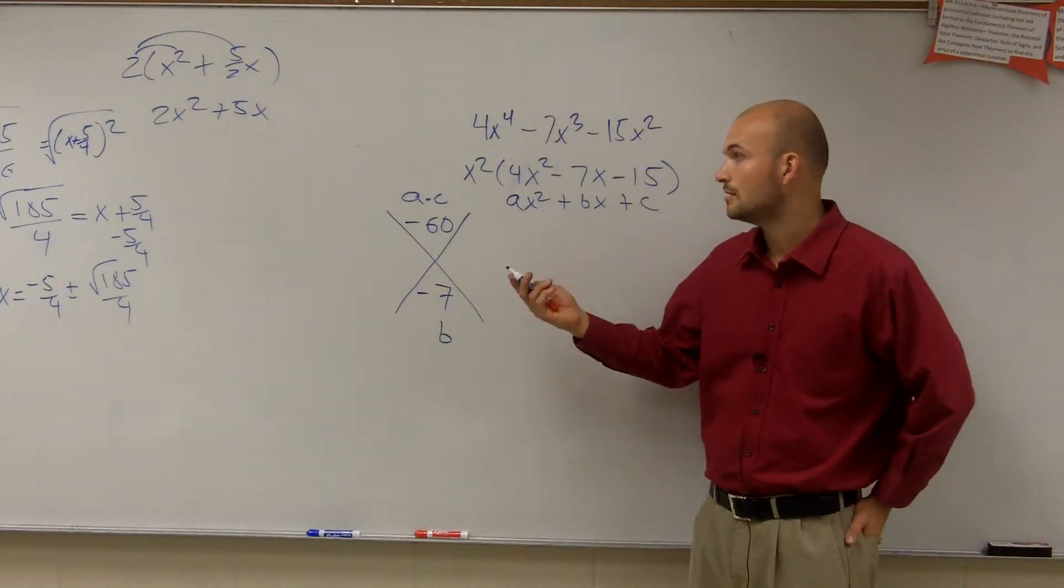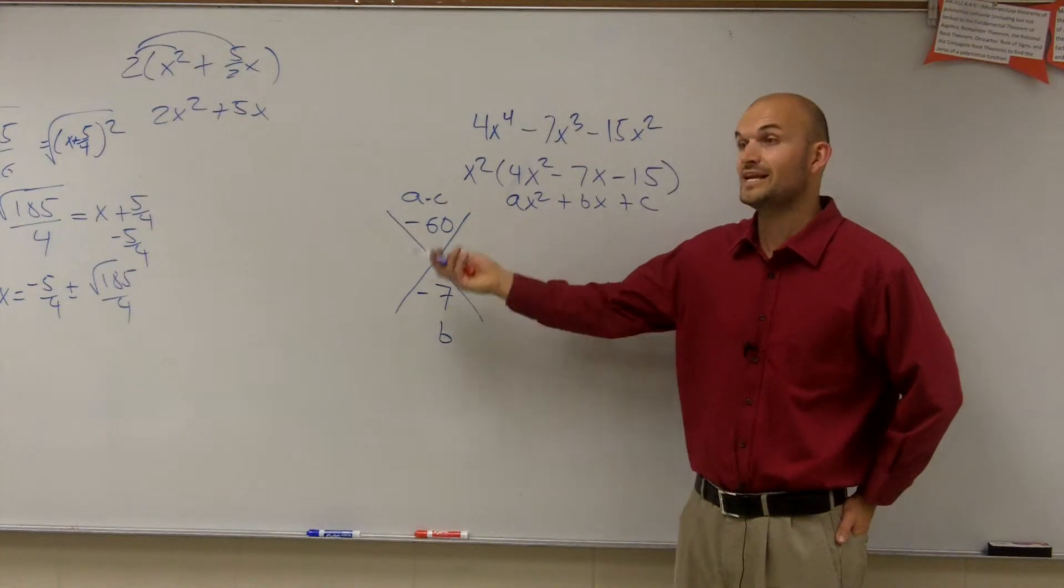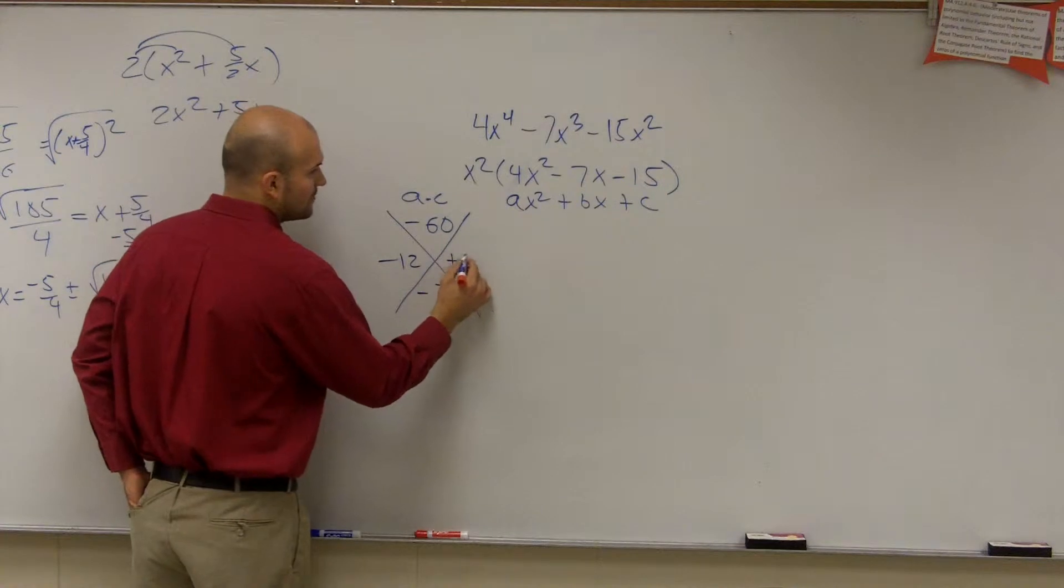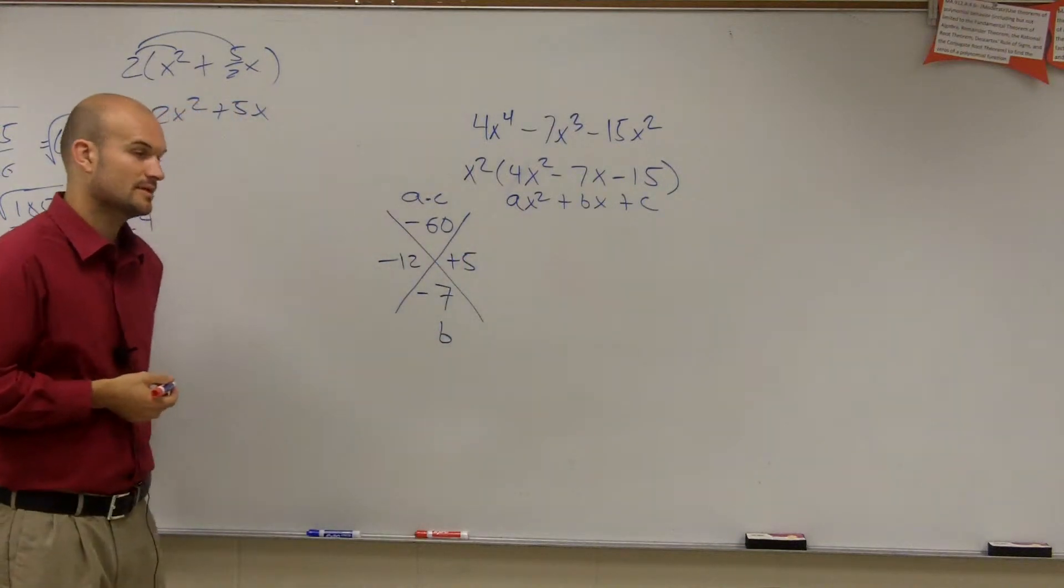Well, which one's going to be positive? You're going to have negative 12 and positive 5, right? So you write those two numbers right there. Negative 12, positive 5.